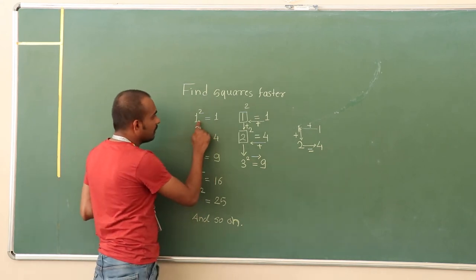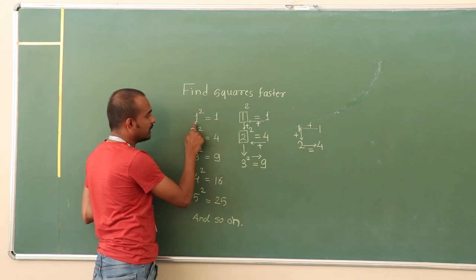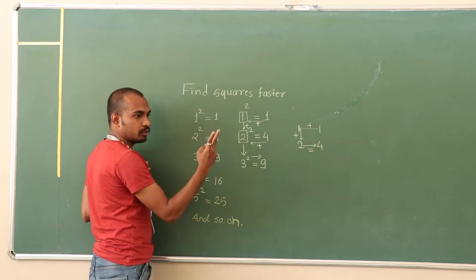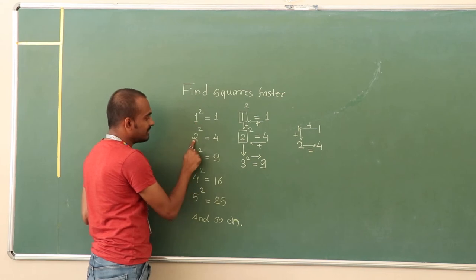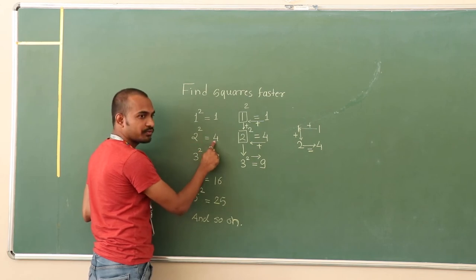Example: 1 square is equal to 1. If I add these two numbers, that is 1 plus 1, it will be equal to 2. And if I add these two with the next number that is 2, then 2 plus 2 becomes 4. This is nothing but square of 2, which is 4.